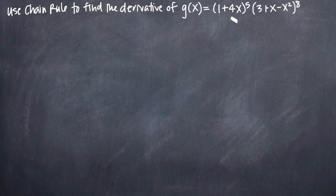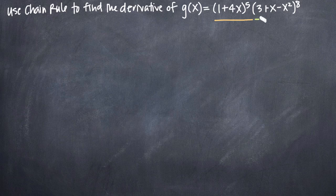Remember that product rule is what we use when we have two functions that are multiplied together and we need to take the derivative. So in this case, we have two functions: one is the quantity 1 plus 4x to the 5th, and the other is the quantity 3 plus x minus x squared to the 8th. Those are two separate functions multiplied together, so we need to use product rule to take their derivative.